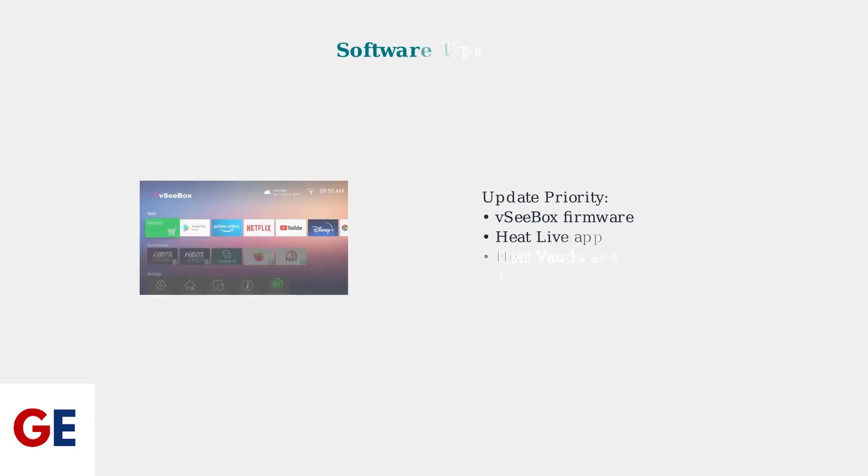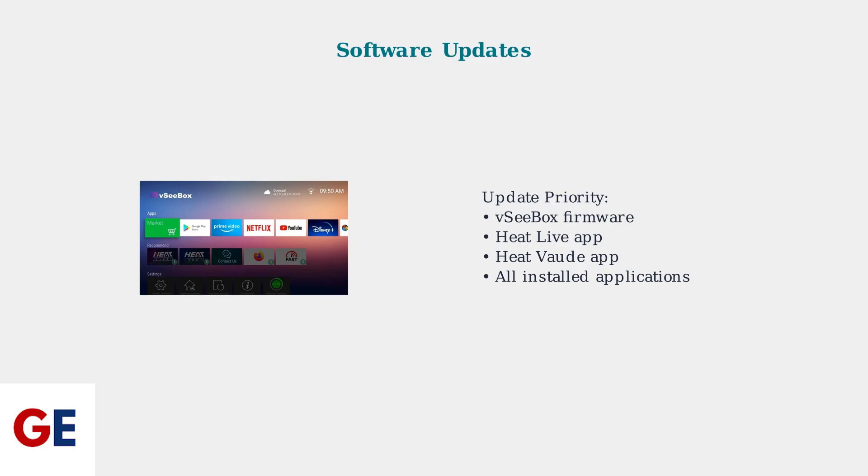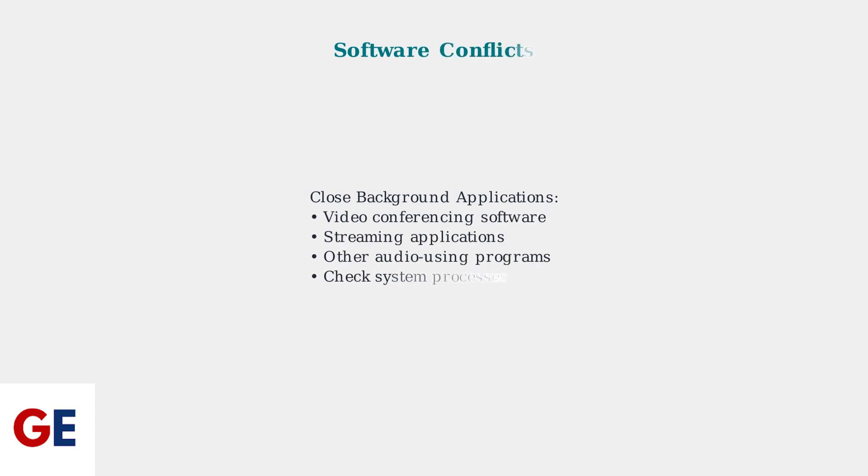Keep your VCBOX firmware and apps updated. Recent reports indicate that updating HeatLive and HeatVaude apps can resolve voice control issues that indirectly affect audio performance. Close any video conferencing or streaming software running in the background, as these applications can create audio conflicts and interfere with your VCBOX's audio output.